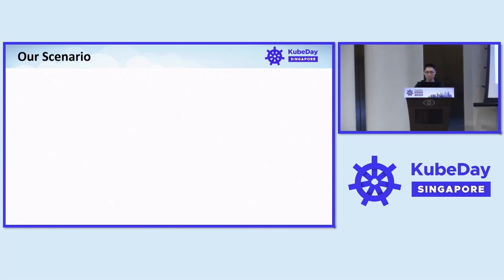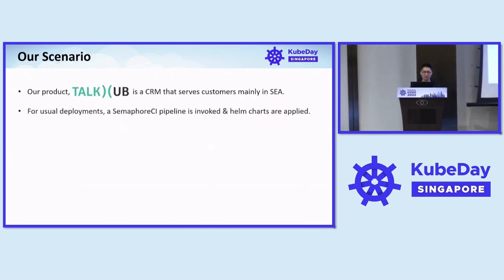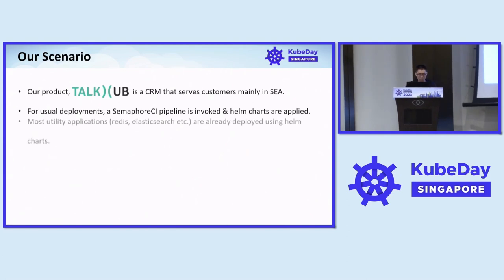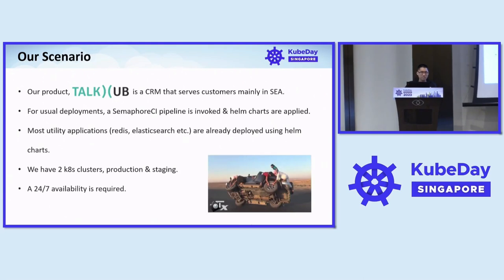In our production, our product is called TalkUp — a CRM serving customers mainly in Southeast Asia. For usual deployments, a Semaphore CI pipeline (a click-based pipeline) is invoked and we apply Helm charts by looking at the deployment repository configuration. There's no tracking — we only know a particular revision was applied, but not when, and whether changes reflect the cluster state. A 24/7 availability requirement means we're basically changing tires on a moving vehicle.